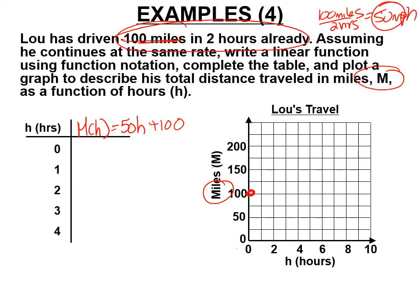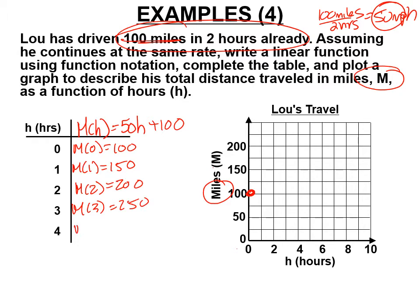Evaluating the function: M of 0 is 100, M of 1 is 150, M of 2 is 200, and so on. We draw a ray starting at the y-intercept at 0, 100. The slope on the graph looks like 2, but each box is worth 25, so the rise is 50 and the run is 1 — slope of 50.